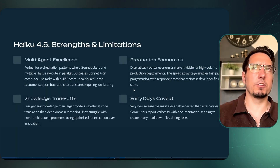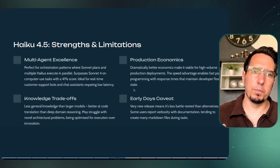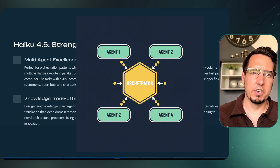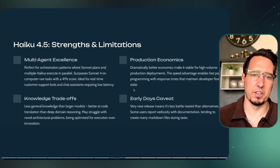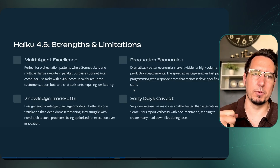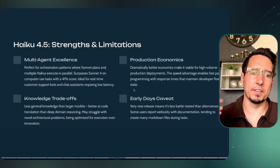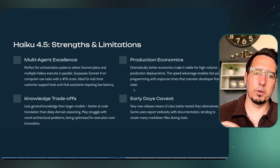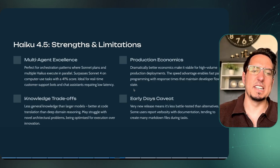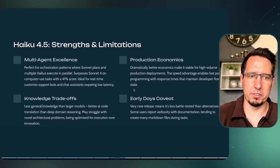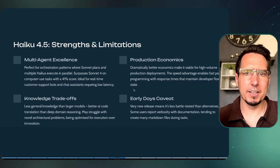What are the strengths of Haiku 4.5? It's really designed for multi-agent orchestration, performs better at tasks, and actually outperforms Sonnet 4 on computer use tasks with a score of 41. It's ideal for real-time customer support bots and chat assistants requiring low latency. The trade-offs: it has less general knowledge than larger models. It can follow very specific coding instructions well, but it can't handle deep reasoning tasks since it may lack that information. You wouldn't want to use Haiku 4.5 for architectural discussions.